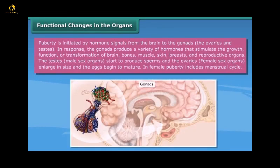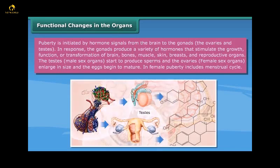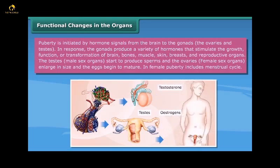Functional changes in the organs: puberty is initiated by hormone signals from the brain to the gonads — the ovaries and testes. In response, the gonads produce a variety of hormones that stimulate the growth, function or transformation of the brain, bones, muscle, skin, breasts, and reproductive organs. The testes start to produce sperm, the ovaries enlarge in size and eggs begin to mature. Female puberty includes the menstrual cycle.